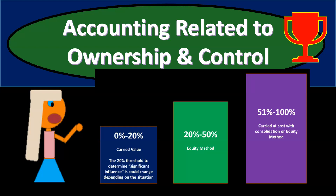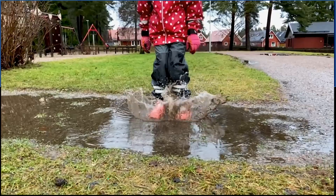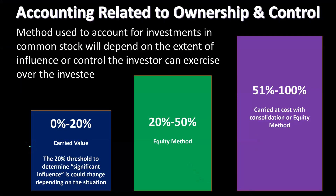In this presentation, we will take a look at accounting methods which relate to and depend on ownership and control. Get ready to account with advanced financial accounting. The method used to account for investments in common stock will depend on the extent of influence or control the investor can exercise over the investee. We're going to have different methods depending on the level of control, so we need definitions and lines for when to apply these different methods.